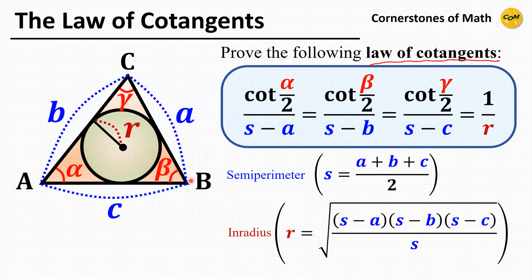Let us denote the length of three sides BC, CA, and AB as A, B, and C respectively, and let us denote the angles opposite to those respective sides as alpha, beta, and gamma respectively. Then we want to prove that cotangent(alpha/2) divided by (S minus A) equals cotangent(beta/2) divided by (S minus B) equals cotangent(gamma/2) divided by (S minus C) equals 1 over R.